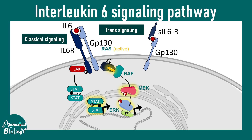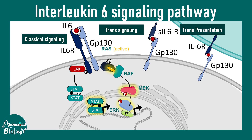Beyond classical signaling, there is trans-signaling, where a soluble interleukin-6 receptor — not membrane-bound — binds to GP130 and triggers the same signaling. There is also a trans-presentation pathway, where one cell expresses the IL-6 receptor and another expresses GP130, and together this trans interaction leads to signaling in the other cell. All these modes converge on the JAK-STAT or MAP kinase pathway, resulting in production of cytokine genes and proliferation genes.